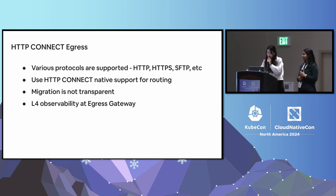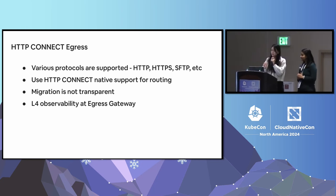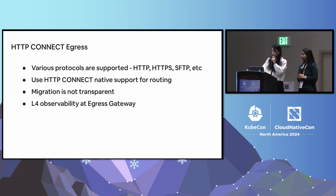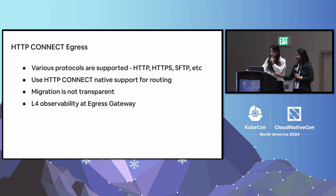Also, because it requires changes to application code across different HTTP frameworks and programming languages, migration must happen case by case. Lastly, only L4 observability — like TCP bytes and connection-level metrics — is available for this egress gateway, because the payload is end-to-end encrypted.